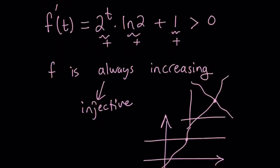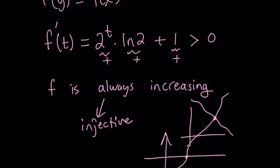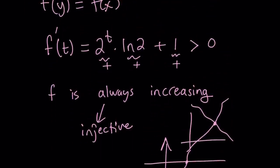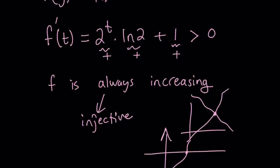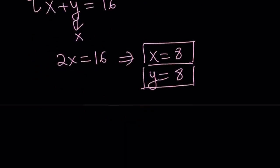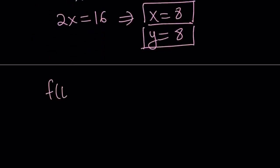So, we proved that f is injective by looking at the derivative. And now, let's go ahead and look at it from another angle. So, f of t equals 2 to the power t plus t. So, what kind of function are we talking about? We said it's not exponential. It's not polynomial. It's kind of a combo.